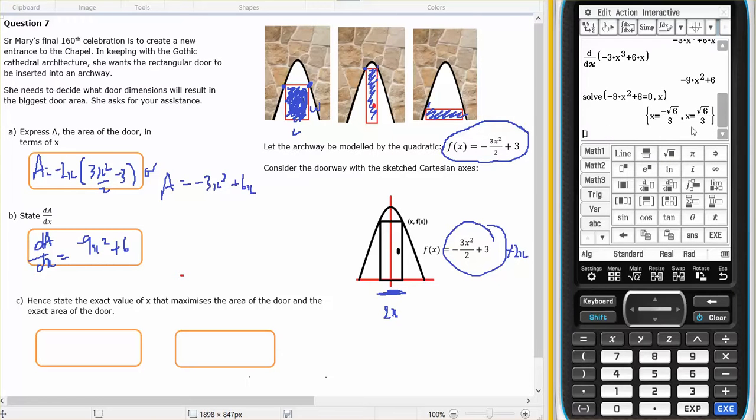And that gives me negative 6, root 6 on 3. Since I want, I'll take the positive value of X, not the negative. Then state the value of X equals root 6 on 3, and it should be in, I guess it's meters. I haven't been told anywhere that it's meters, so I'll just write units.